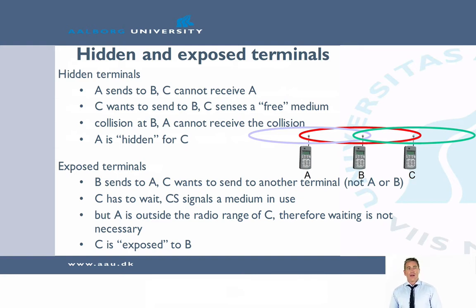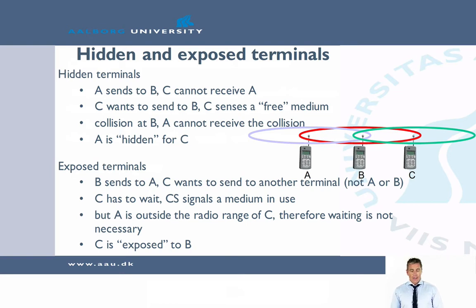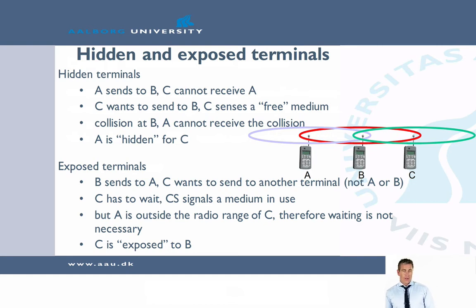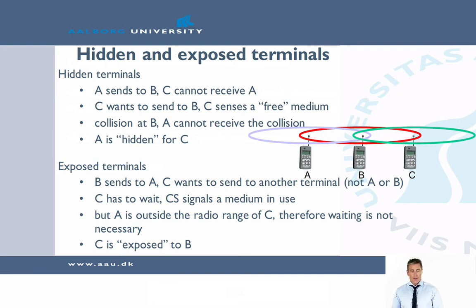This is called the hidden terminal problem because A is hidden from C. There is a similar problem called the exposed terminal problem. Assume that B is sending to A, and C wants to send something to another terminal, such as terminal D in the figure. C senses that it has to wait because carrier sense detects that the medium is in use. But this is not a real problem, because A is outside the radio range of C. When C is sending to someone who cannot hear A or B, there is no problem, yet C refrains from sending even though it could.